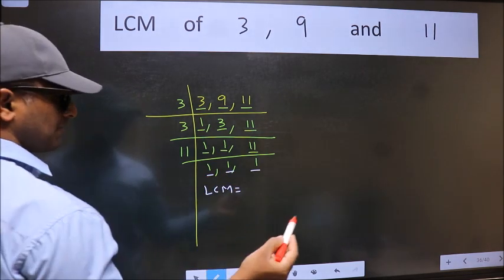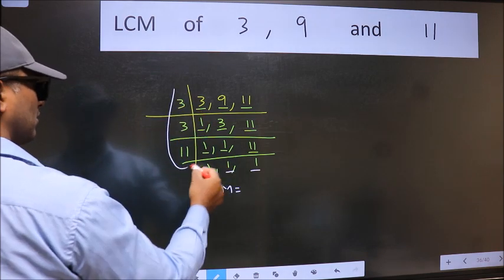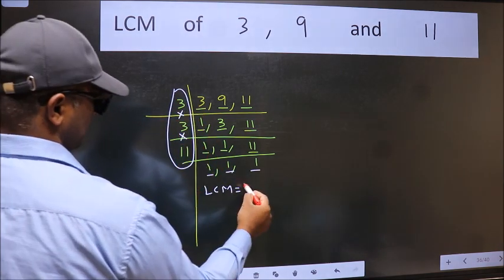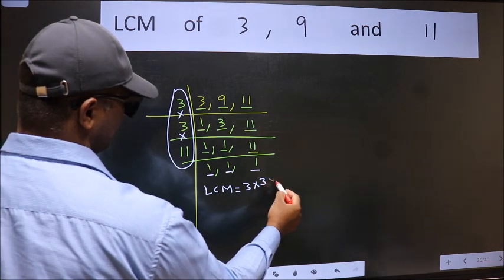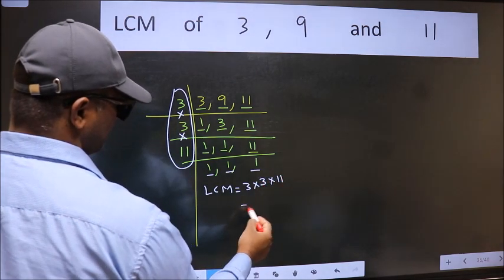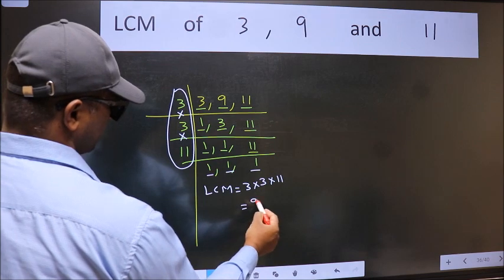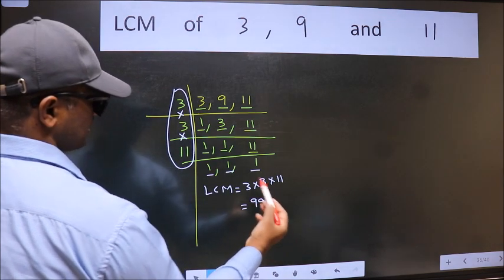LCM is the product of these numbers, that is 3 into 3 into 11. When we multiply these numbers, we get 99 as our LCM.